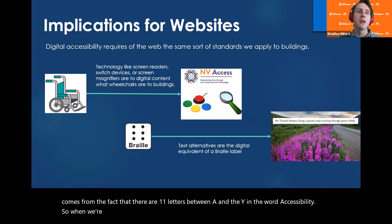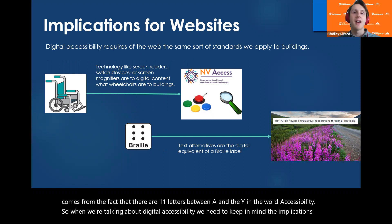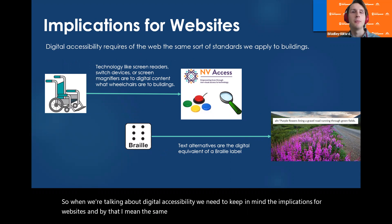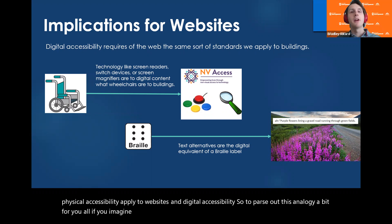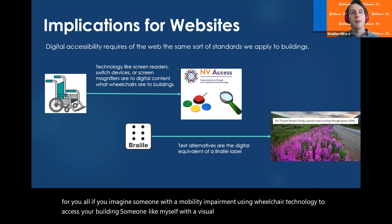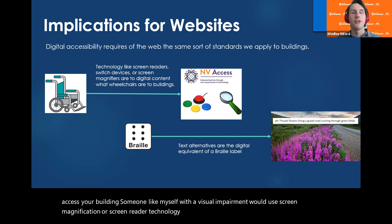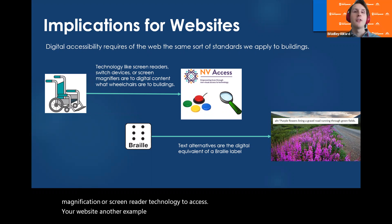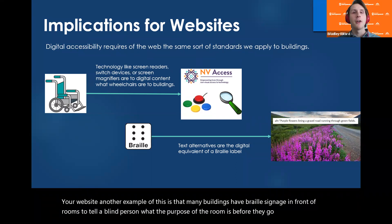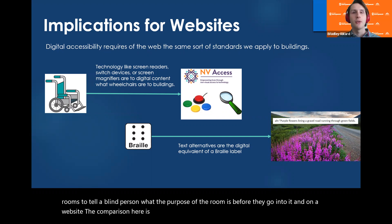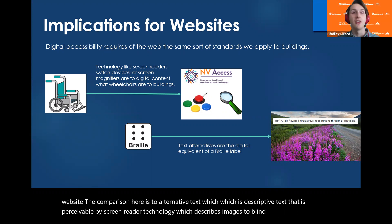When talking about digital accessibility, we need to keep in mind the same sorts of standards we apply to buildings for physical accessibility also apply to websites. If you imagine someone with a mobility impairment using wheelchair technology to access your building, someone like myself with a visual impairment would use screen magnification or screen reader technology to access your website. Similarly, many buildings have braille signage to tell a blind person what a room is for — on a website, the comparison is alternative text, which is descriptive text perceivable by screen reader technology that describes images to blind users who cannot see the image themselves.